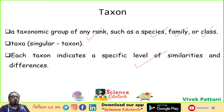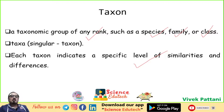The main group in which all other taxa are included is called kingdom, and after it the taxa are arranged serially like sub-kingdom, phylum, class, sub-class, order, family, genus, species. Variations decrease in sequence from kingdom to species.